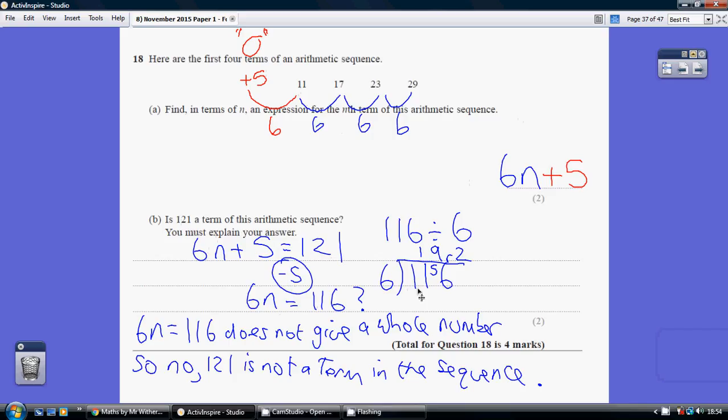So another short division, 6 into 11 is 1 carry 5. 6 nines are 54, remainder 2. So we do get a remainder. So n is not a whole number. So no, 121 is not a term in the sequence.